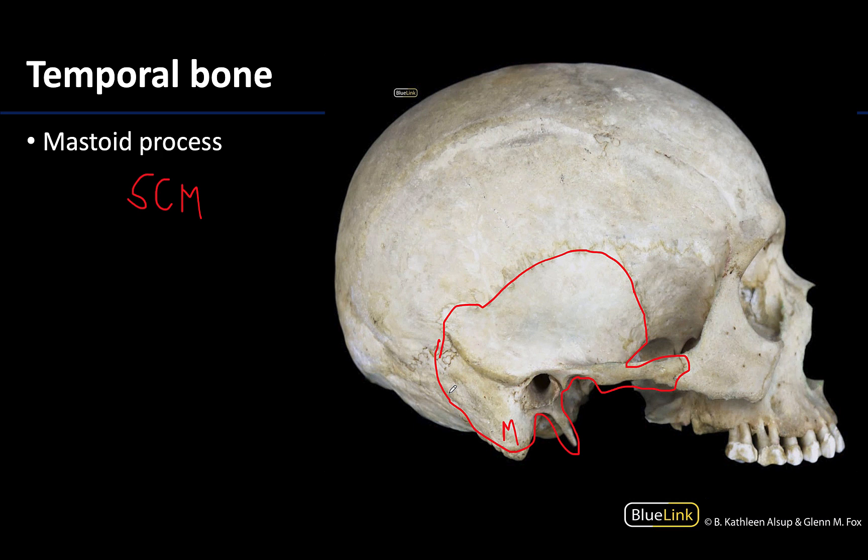That is the osteology that you need to be able to identify in today's session. We will have similar videos for the muscles, veins, arteries, and nerves that you need to identify. As you work through these, try to figure out how you're going to identify them and think about why we wanted you to be able to identify these — such as what is going to attach there, like in the case of the mastoid process, or what is going to travel there, as in the case of the jugular foramen. Thank you for your time and attention, and please reach out if you have any questions. Have a great day.